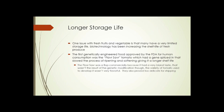Longer storage life: one issue with fresh fruits and vegetables is that many have a very limited storage life. Biotechnology has been increasing the shelf life of fresh produce. The first genetically engineered food approved by the FDA for human consumption was the so-called Flavor Saver tomato, which had a gene spliced in that slowed the process of ripening and softening, giving it a longer shelf life. The Flavor Saver, however, was a flop commercially because it had a really bland taste — not as a result of the genetic modification, but because the variety of tomato used to develop it wasn't very flavorful to start with. They also proved a little too delicate for the rigors of shipping.